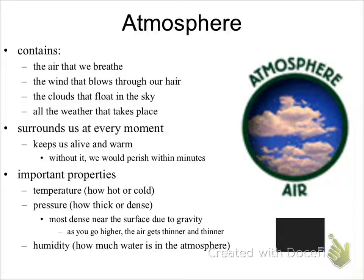The atmosphere is an envelope of gas that surrounds the Earth and extends thousands of kilometers out from Earth's surface. The atmosphere has five primary layers that are, from lowest to highest, the troposphere, stratosphere, mesosphere, thermosphere, and exosphere. We will study these layers in a later presentation. The atmosphere contains the air we breathe, the wind that blows through our hair, the clouds that float in the sky, and all the weather that takes place.